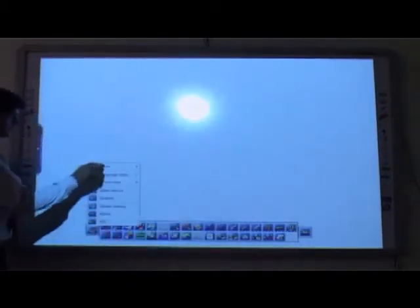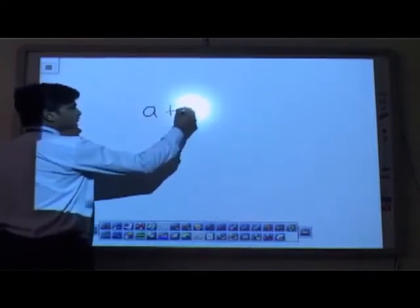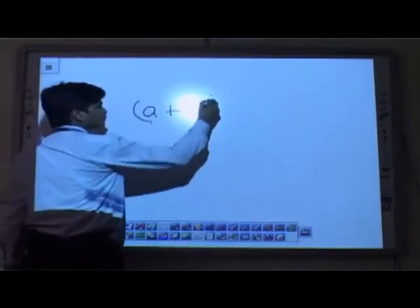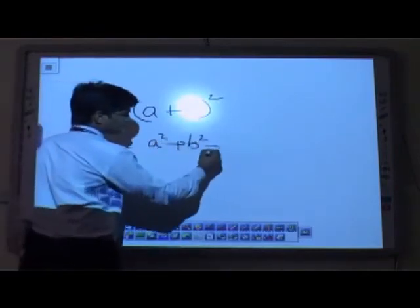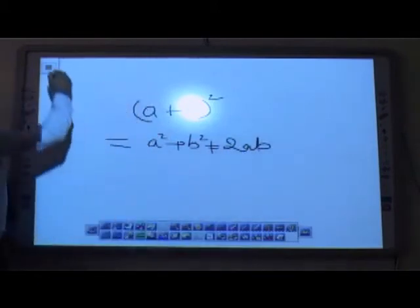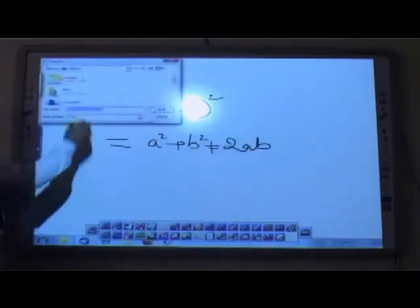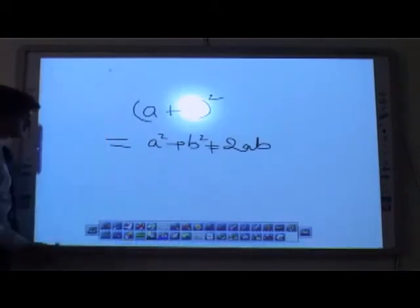I can record my screen. This is a screen recording function. I can start recording. I can write anything on the board. A plus B. The formula I want to derive. A square plus B square. I can record it. Now the video is made. You want to save. Like this, I can save my videos also.